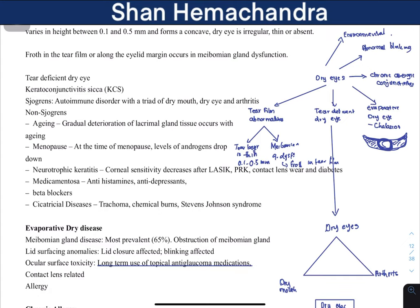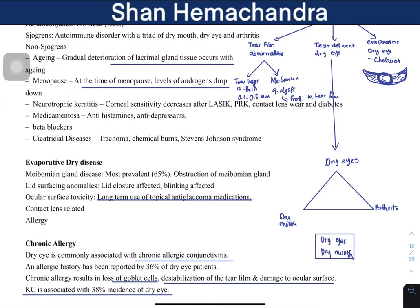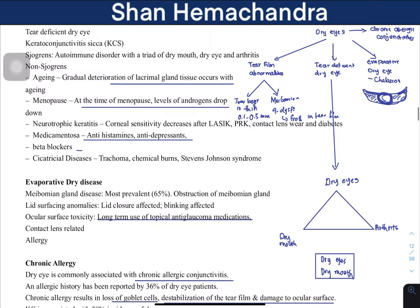Non-Sjögren's causes include neurotrophic keratitis, where there is decreased corneal sensitivity. Keratitis is inflammation of the cornea, and this occurs after LASIK or PRK (photorefractive keratectomy) surgery, as well as from contact lens wear, diabetes, and medicamentosa rhinitis — a rebound reaction from prolonged use of anti-congestive drugs. Beta blockers also cause dry eye by inhibiting tear secretion. Scarring diseases such as trachoma, chemical burns, or Stevens-Johnson syndrome can also be causes.